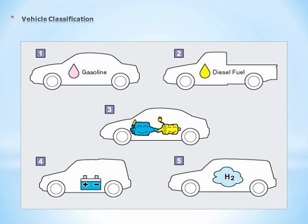Vehicles can be classified by the following types of motive power: 1. Gasoline engine vehicle, 2. Diesel engine vehicle, 3. Hybrid vehicle, 4. Electric vehicle, 5. Fuel cell hybrid vehicle.